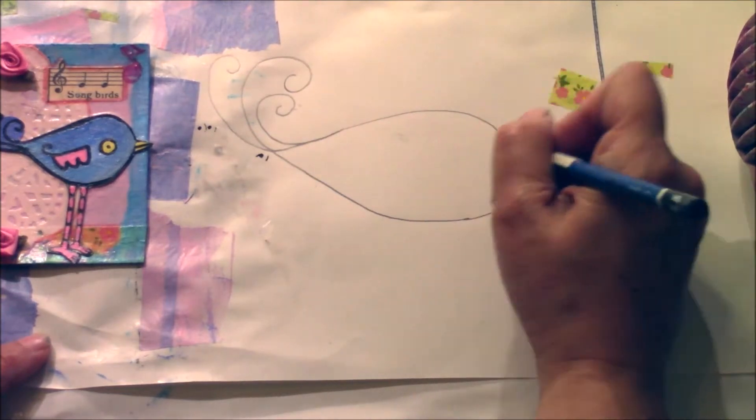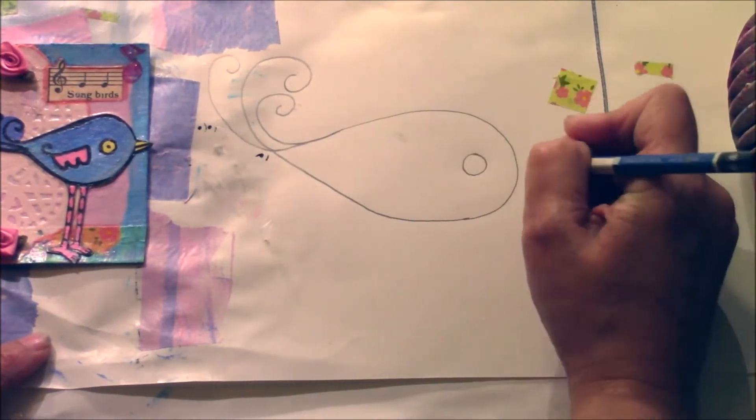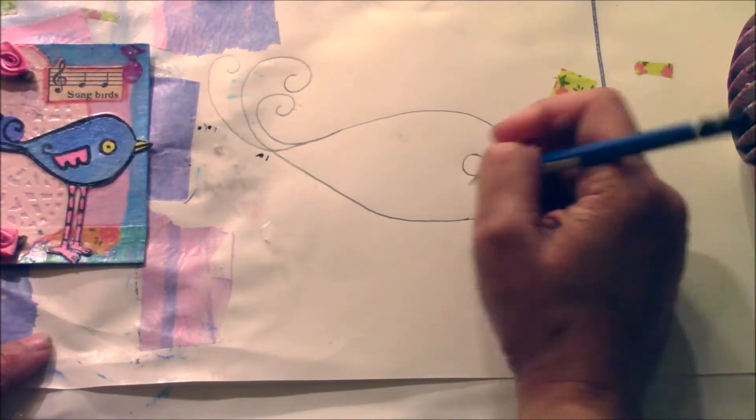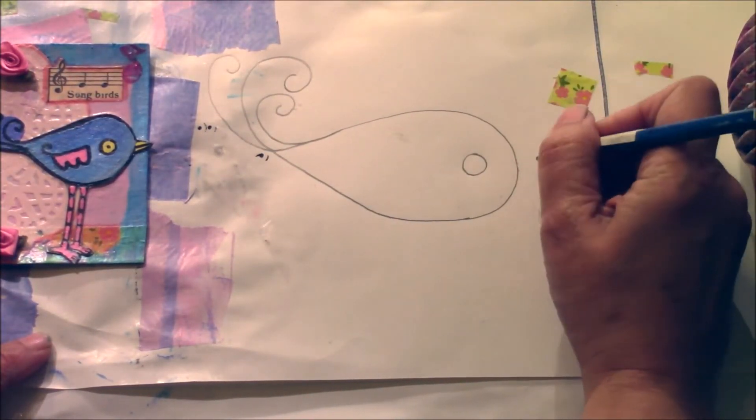And then I go ahead and I put in an eye. And this is also a way to make a fancy fish if you wanted to. All you'd have to do is put the, you know. But I'm making a bird.